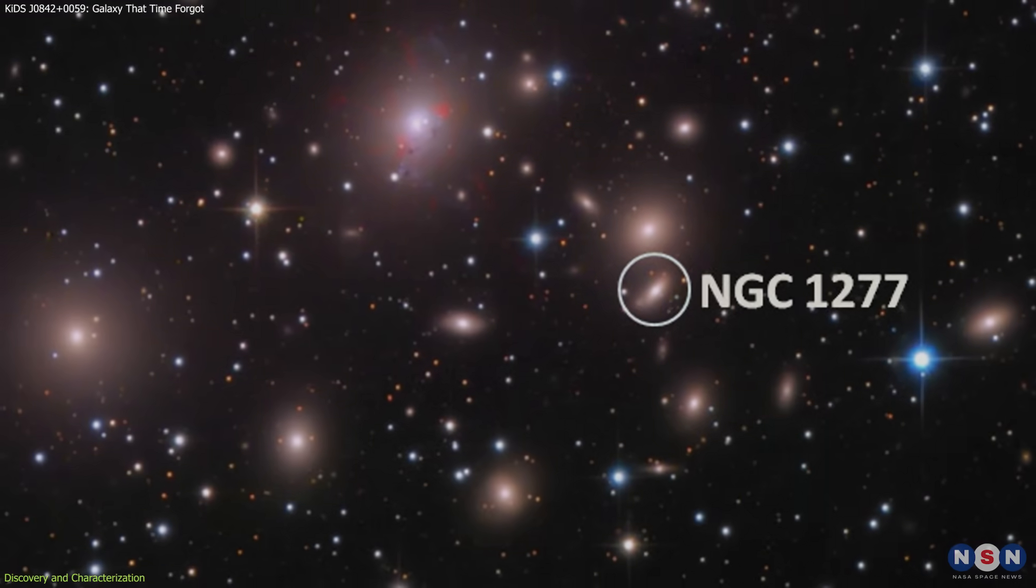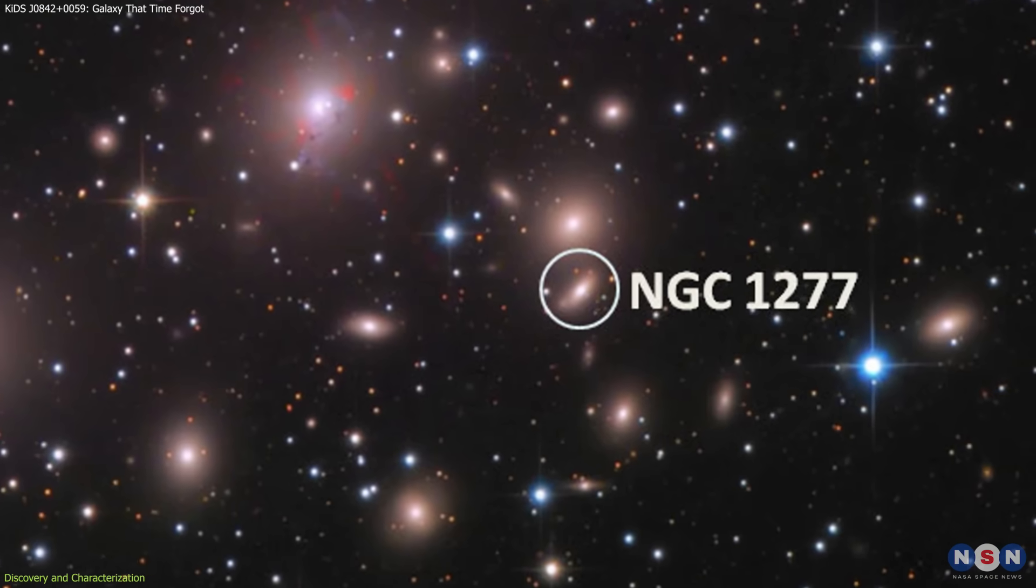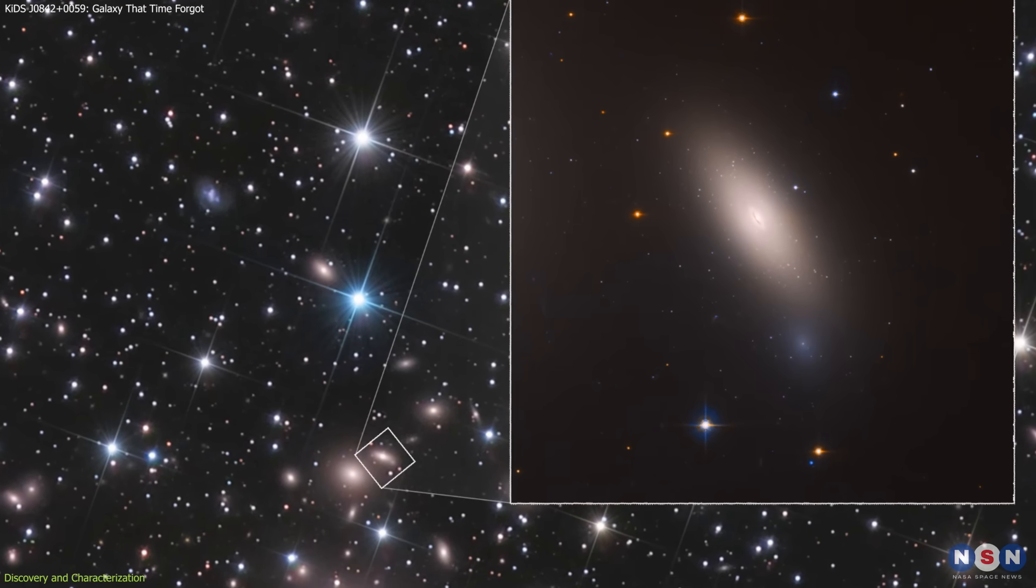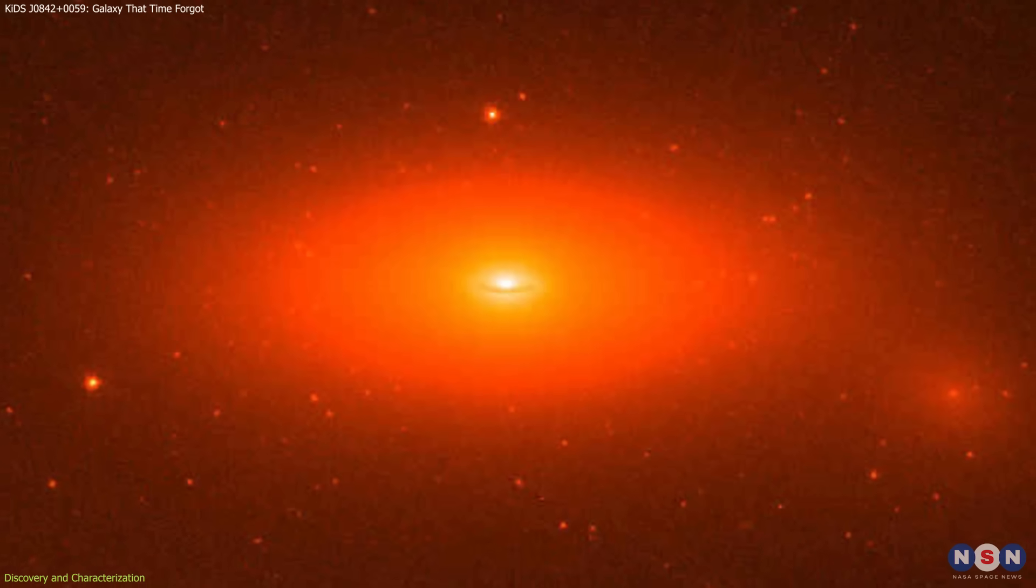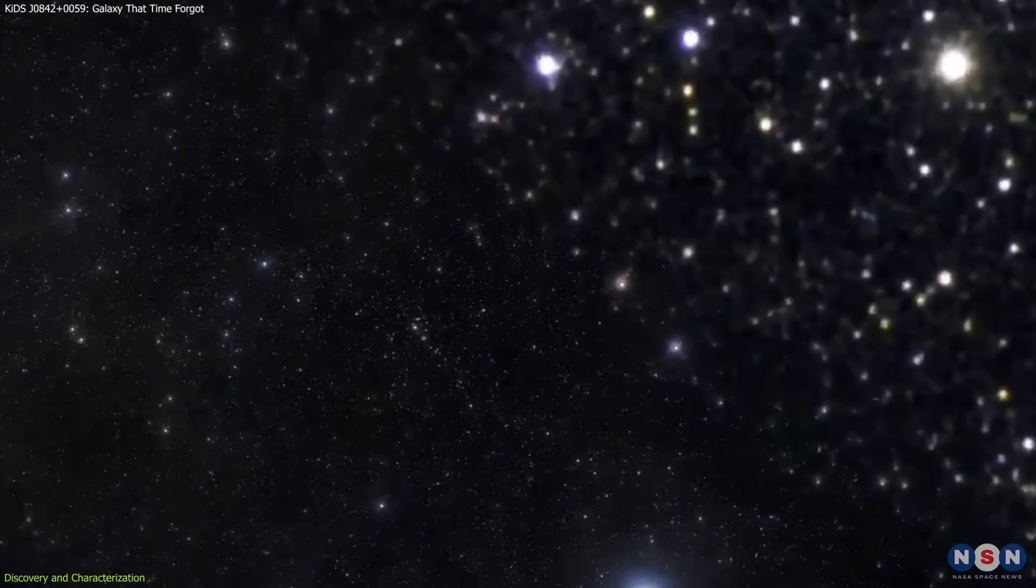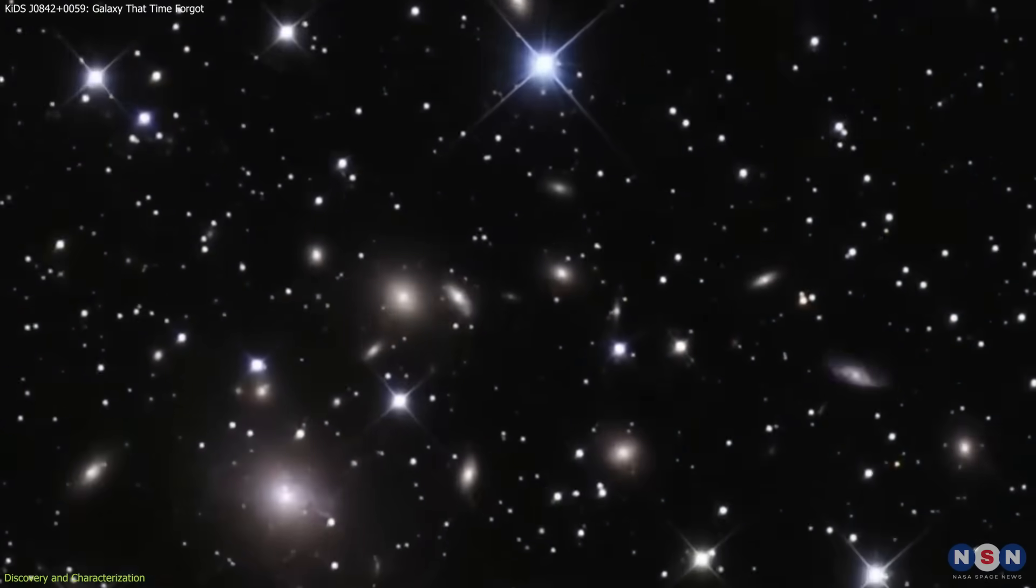To place it in context, researchers compared it to NGC 1277, a well-known relic galaxy located just 240 million light years from Earth. It is similarly compact and old, but it exists in a much more evolved region of space and is closer to our time.